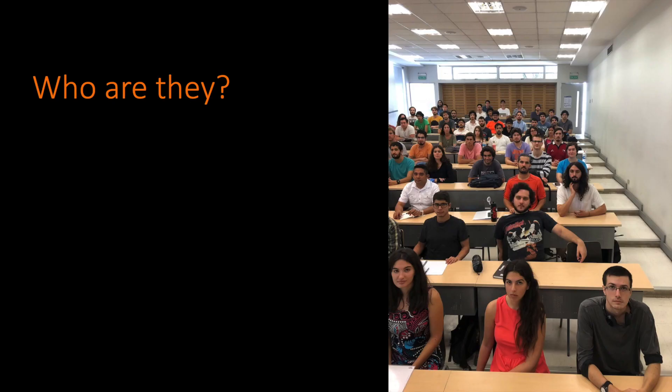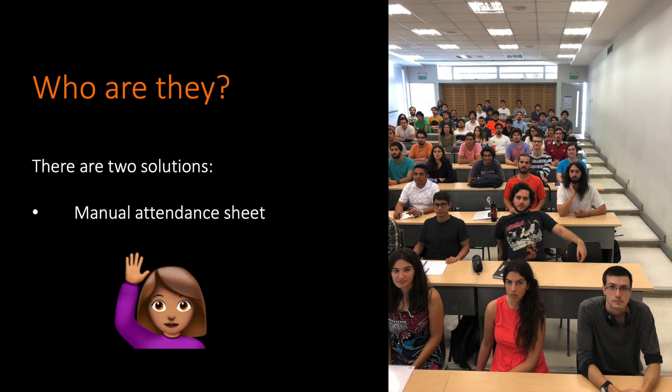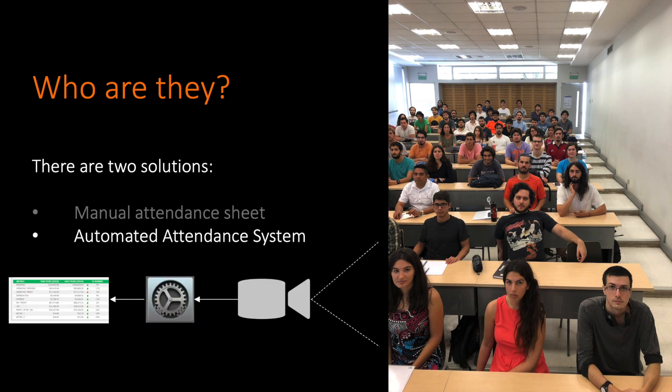This is my classroom with around 70 students. If we want to manage an attendance sheet, we have two different solutions. The first one is the manual attendance sheet — for this case, it takes more than four minutes. The second one is the automated attendance system, which is what we are proposing in our work. We take an image and using a computer vision algorithm, we are able to build an attendance sheet automatically.